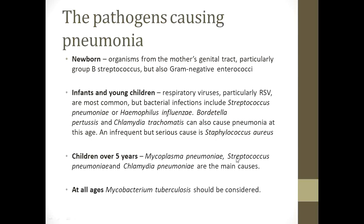If we classify pathogens by different pediatric age groups: in newborns, organisms come from the mother's genital tract, particularly Group B Streptococcus (GBS), but also gram-negative enterococci like E. coli. In infants and young children, viruses like Respiratory Syncytial Virus (RSV) are most common, but bacterial infections like Streptococcus pneumoniae and Haemophilus influenzae also occur.